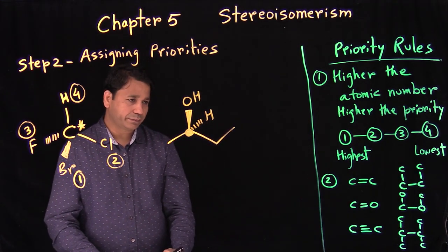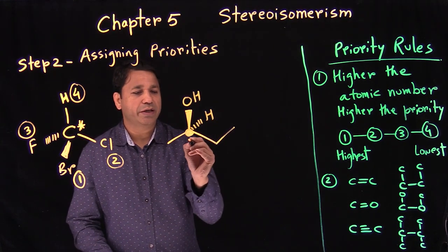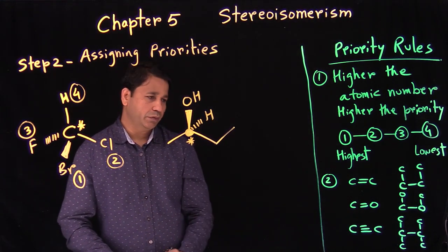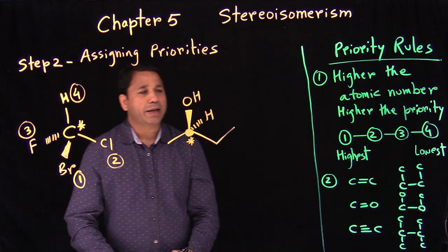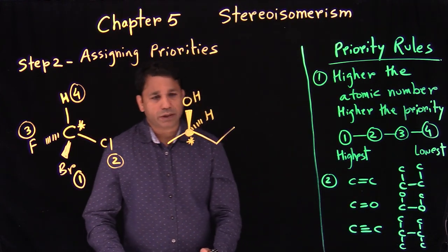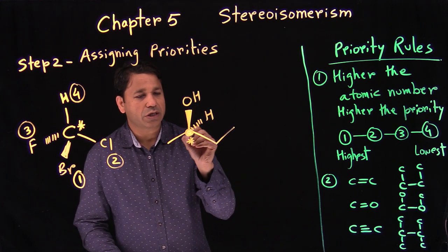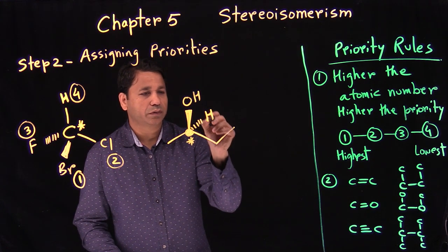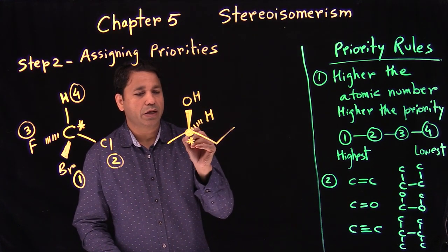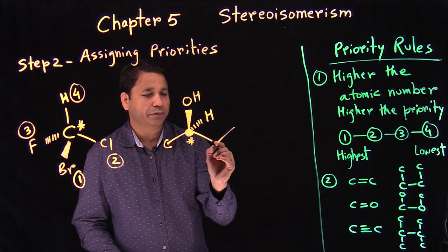In this case, we're looking at this carbon right here, and the missing group is a hydrogen. This carbon is stereogenic. Now going to step two — starting from this carbon, we have oxygen, a hydrogen, a carbon, and a carbon.